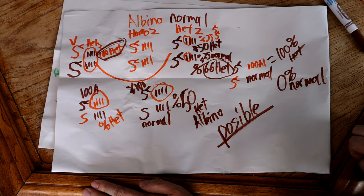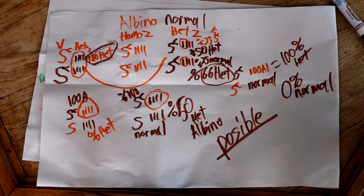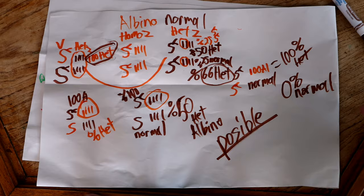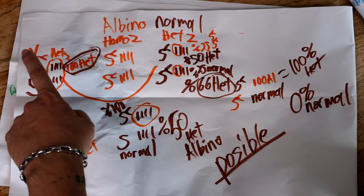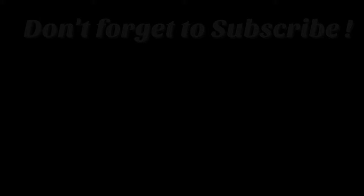Most important thing in all this: if there's a visual parent carrying that recessive gene, the babies are all going to have it. So whenever you're buying and want to go cheaper — getting ones that carry the gene rather than paying more for the ones visually showing it — always make sure that one of the parents is a visual animal of the gene that you want.